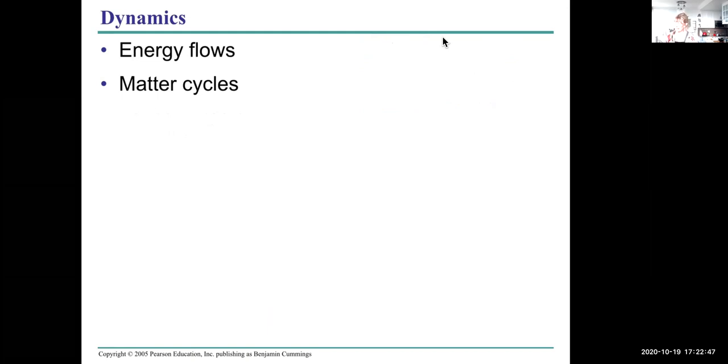The dynamics of an ecosystem are such that energy flows right through it. What is the ultimate source of energy on the planet? The sun. And the ultimate destination is generally heat, which is lost. So energy flows, but energy can be converted from one form to another but can't be created or destroyed.